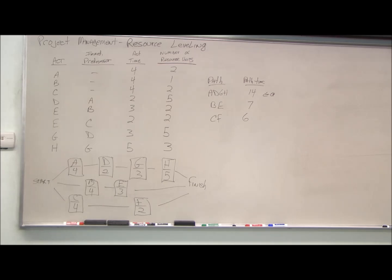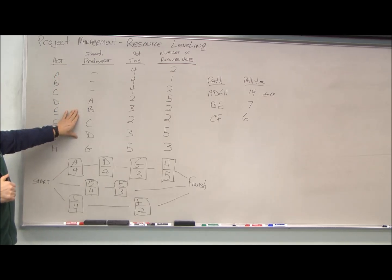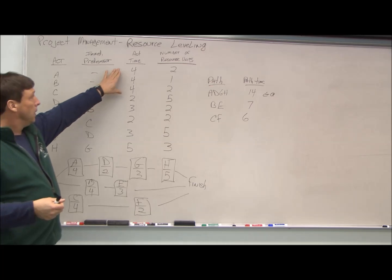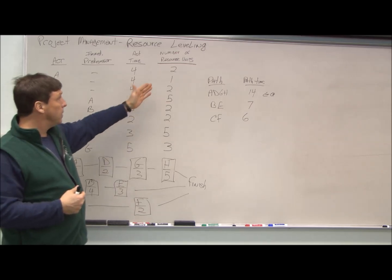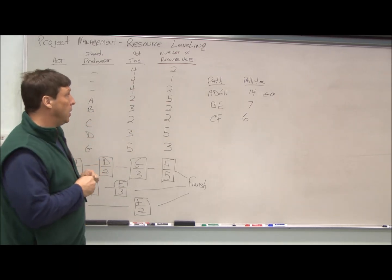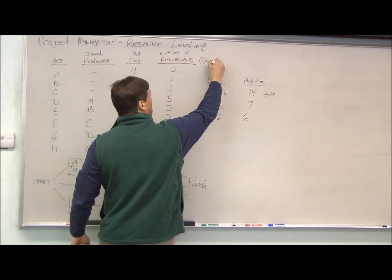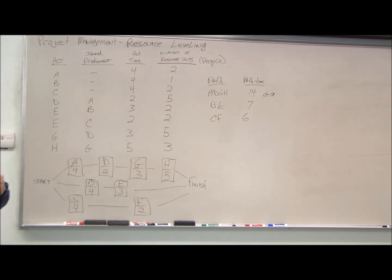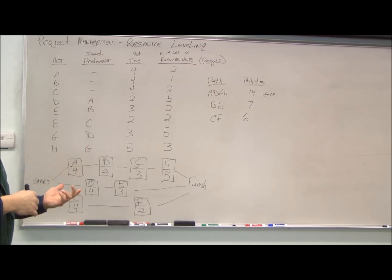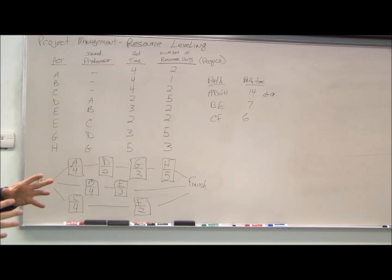Today we're going to take a look at a quick little example. I've given you the activity codes, the immediate predecessor — the step that comes before — and the activity time, how long it will take. What we've added now is the number of resources and units. To make it more real, I'm going to call it people, because you don't want fluctuations in people. You don't want to bring people in one day just to lay them off the next day because you don't have enough work. You want a steady stream of people over the complete project.